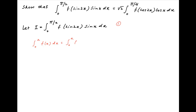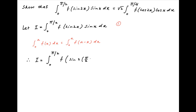Recall a property of definite integrals that integral 0 to a of f(x) dx is equal to integral 0 to a of f(a minus x) dx. Therefore, using this result, I can be written as integral 0 to π/2 with x replaced by π/2 minus x in the integrand.